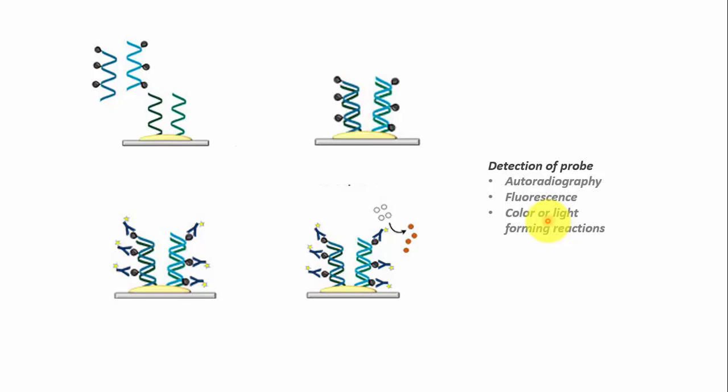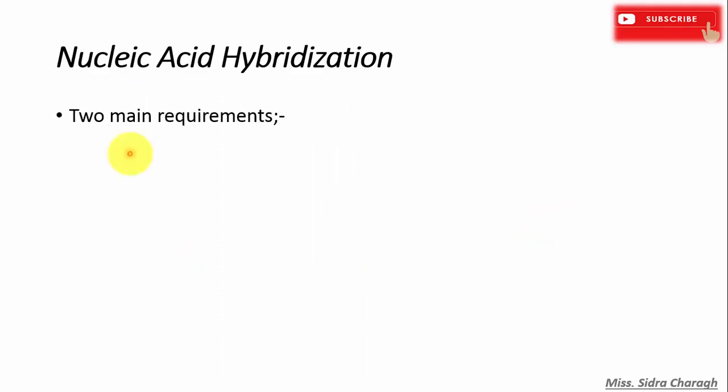But nucleic acid hybridization requires two main things. First, the target nucleic acid and probe should be single-stranded. In other words, the two populations of nucleic acid should be single-stranded, and therefore the DNA is first denatured to make single-stranded DNA molecules. And the second requirement is gel electrophoresis.